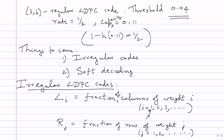Instead of writing down vectors like this, it is also convenient to collect them together into a polynomial. We can say L of x equals summation of L_i times x power i, and R of x equals summation of R_j times x power j. It's just a way of thinking about it — it's just a vector. You can think of it as a polynomial if you want; then it becomes a degree distribution polynomial.